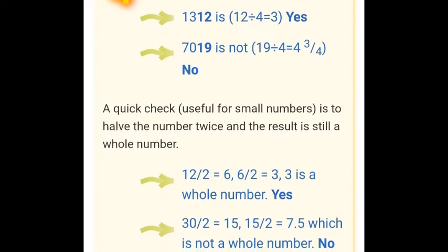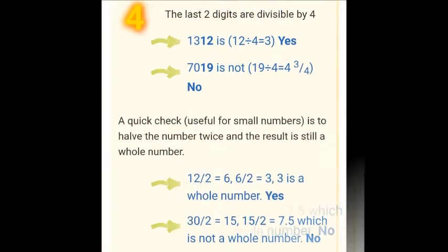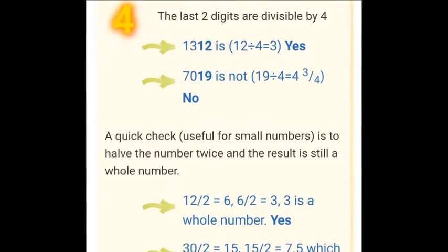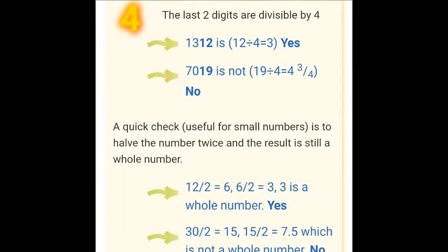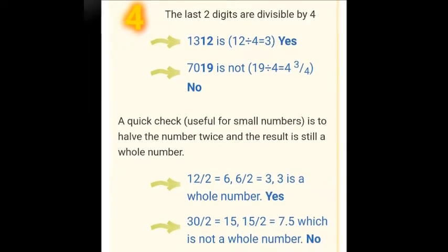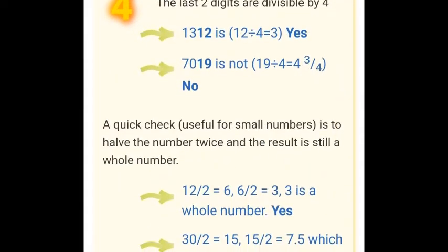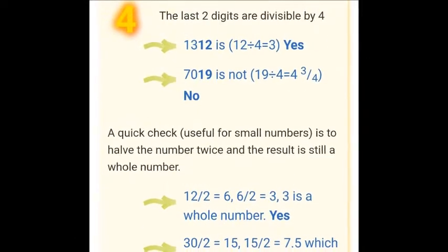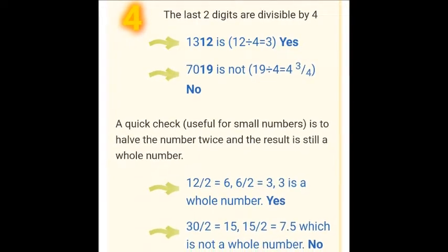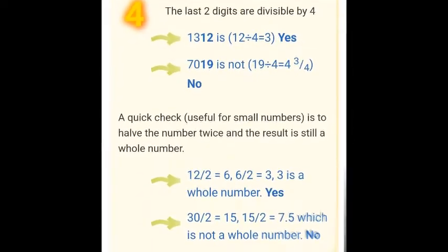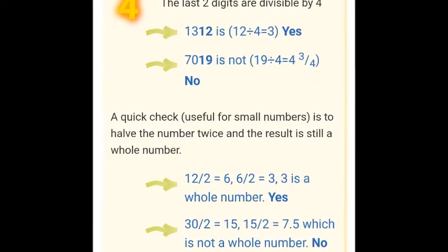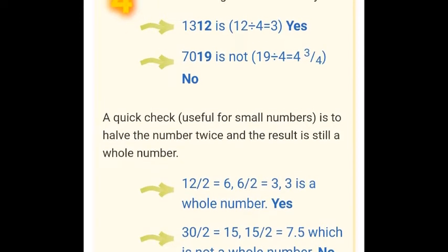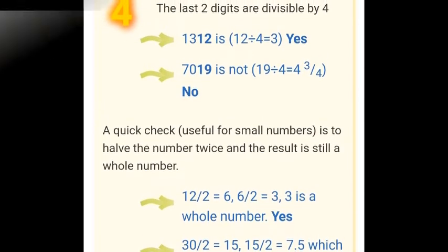A quick alternative check: if we halve the number twice and the result is still a whole number, then the number is divisible by 4. For example, take 12: half is 6, half again is 3 — a whole number, so 12 is divisible by 4. Take 30: half is 15, half again is 7.5 — not a whole number, so 30 is not divisible by 4.